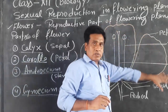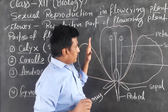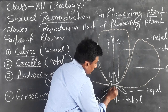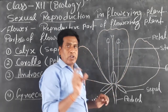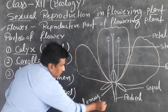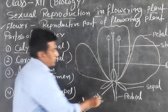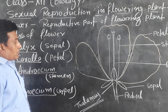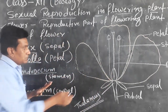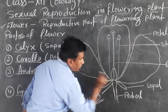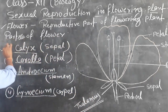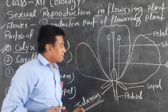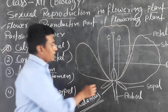This is the diagram of a typical flower — the longitudinal section of a typical flower. The whole parts of the flower are placed on a solid part called the thalamus. This solid part is called the thalamus, and it is attached to the plant with a stalk-like structure called the pedicel. On the thalamus, four parts are arranged. The outermost whorl of the flower is called calyx, and its unit is called sepal.